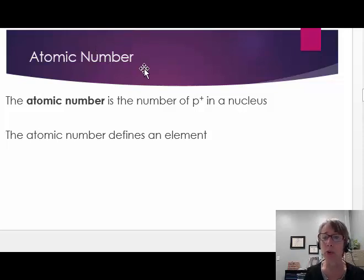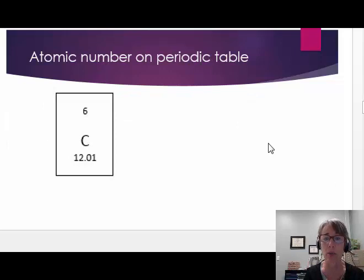The atomic number is the number of protons in a nucleus. The atomic number defines an element. Once we know how many protons are in a nucleus, we know what element it is. Once we know what element it is, we know how many protons are in the nucleus.